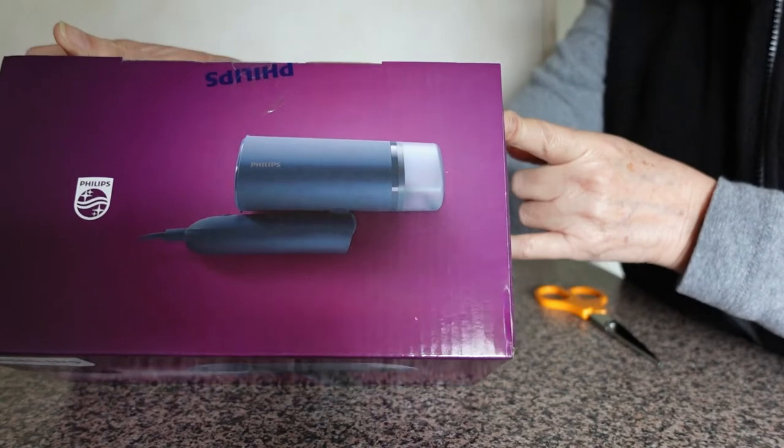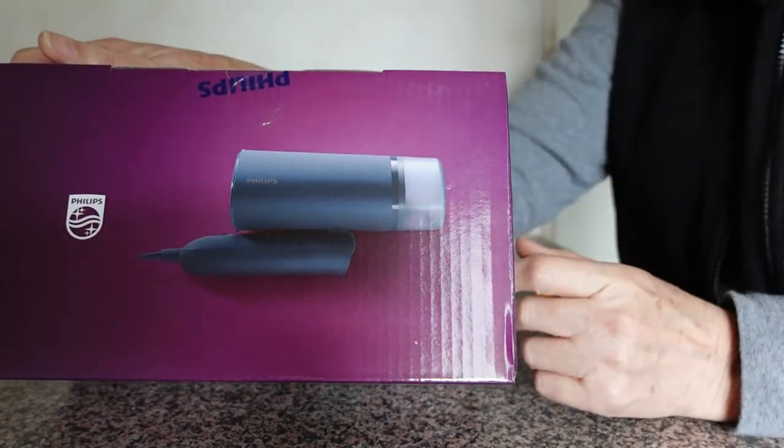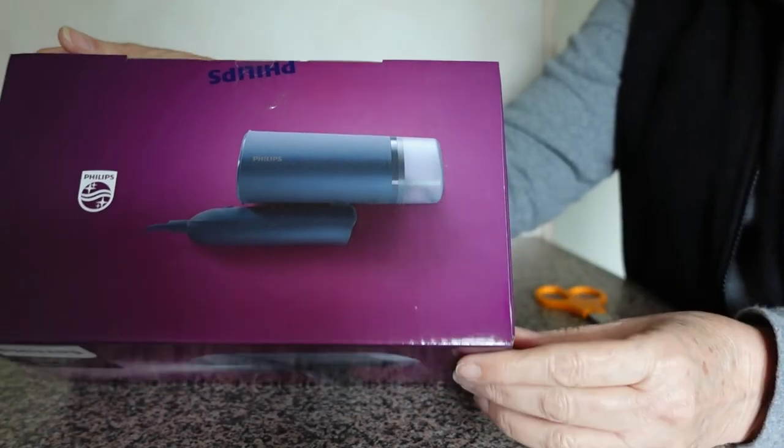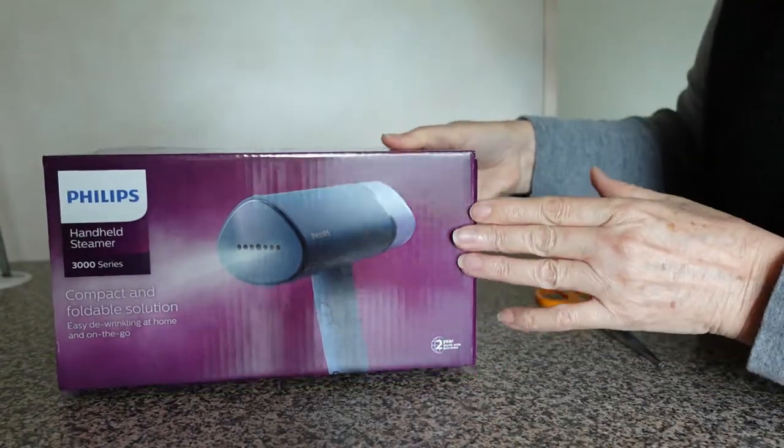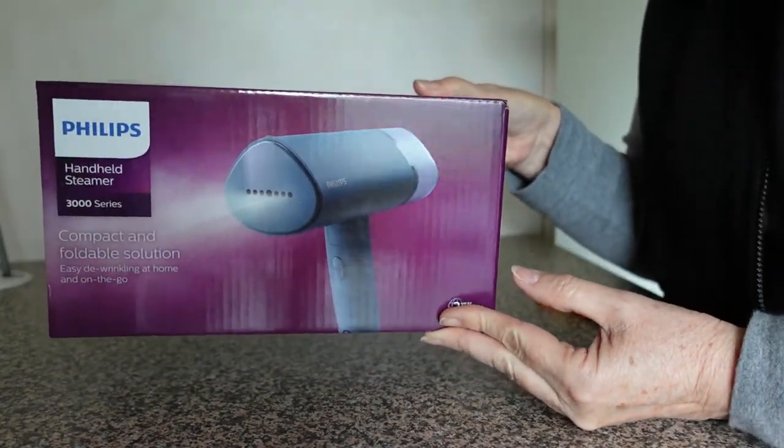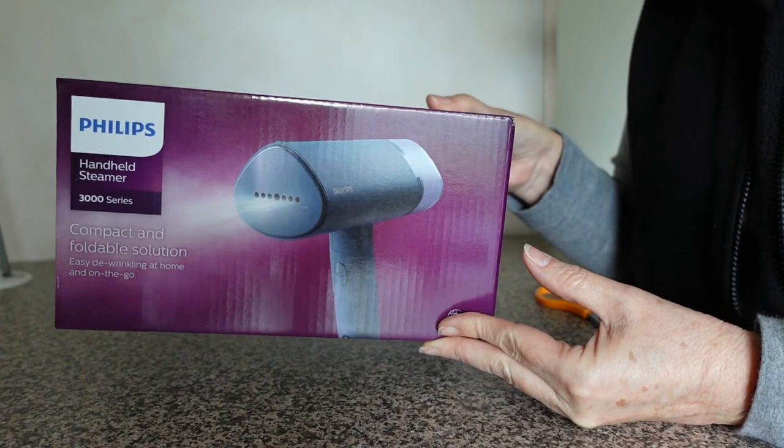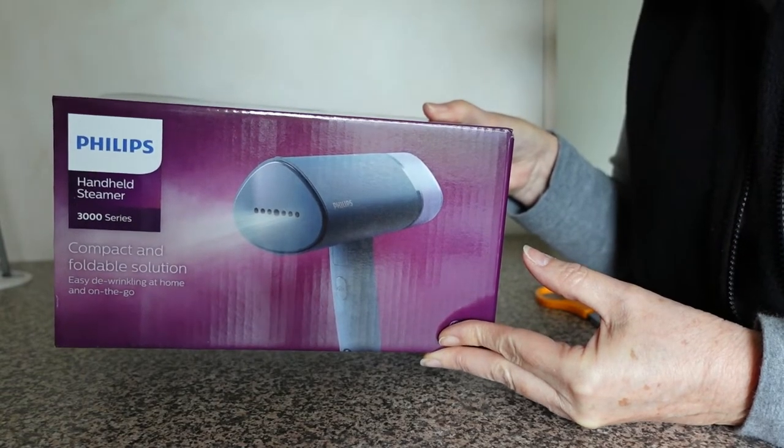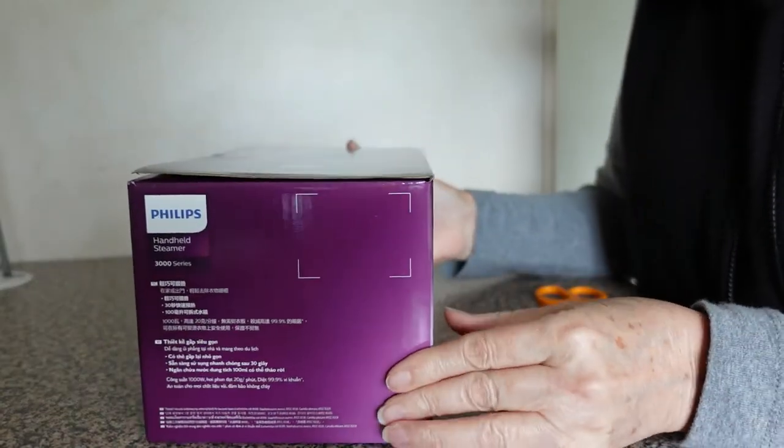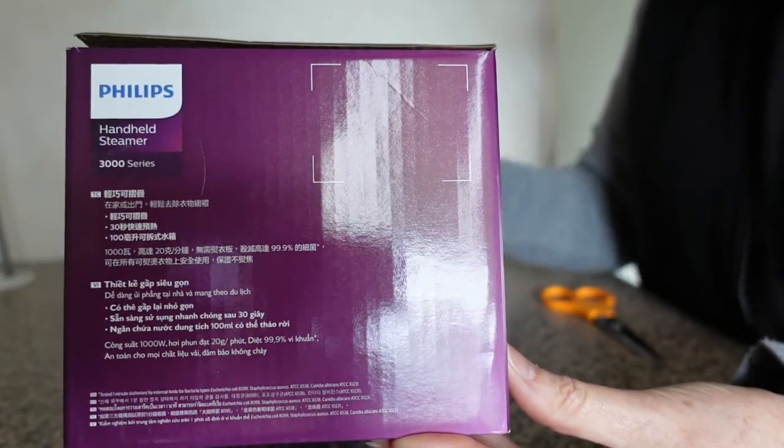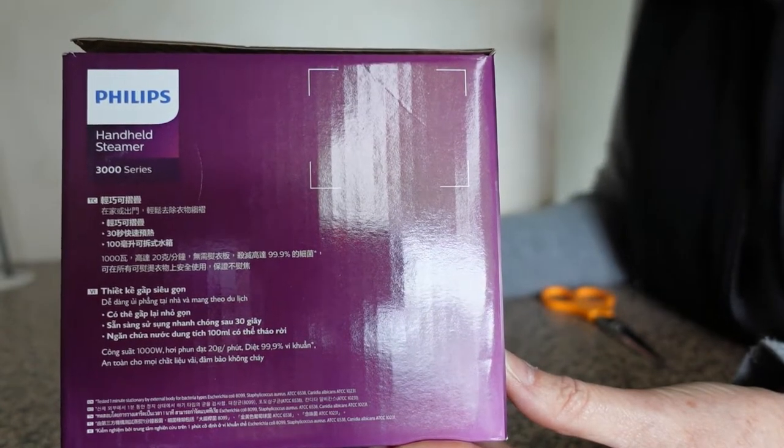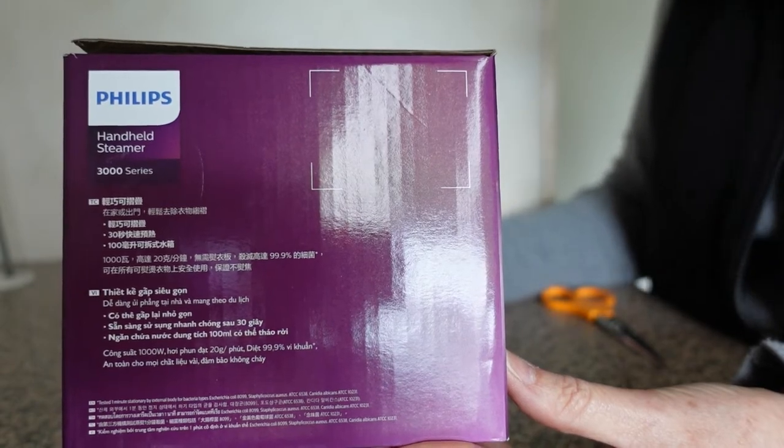This looks like a pretty groovy one. I've never owned one of these before. It kind of folds up. It produces steam and you can use steam to take out wrinkles from garments because when you steam them and heat up the fibers in the garment the fibers relax and the wrinkles relax out and fall out supposedly. That's the theory anyway.